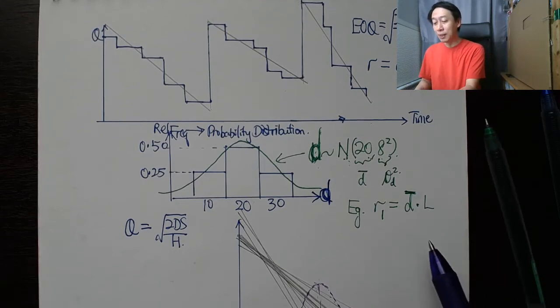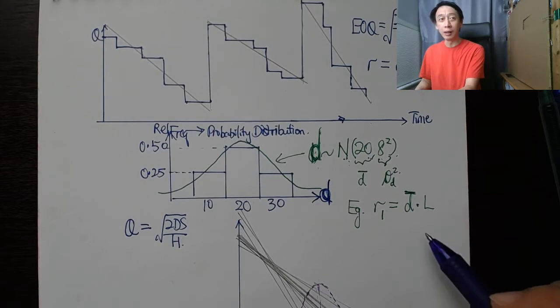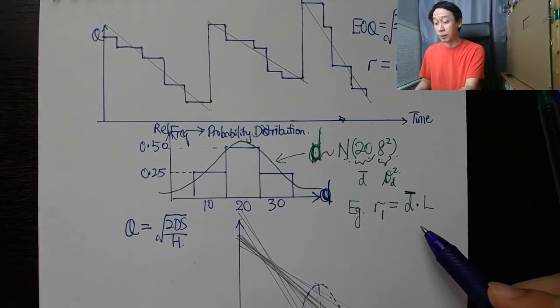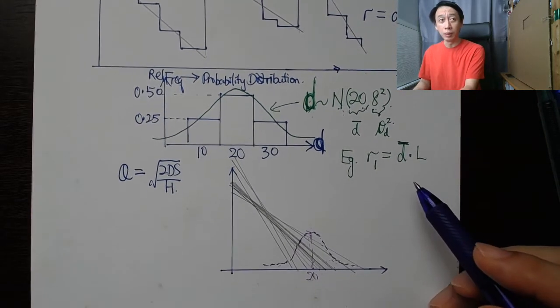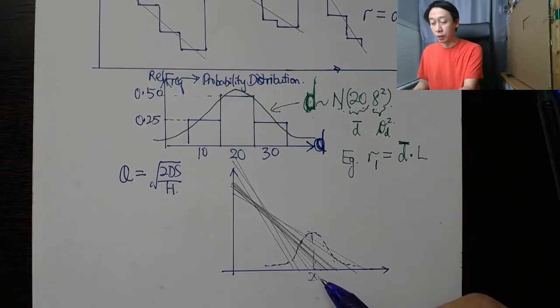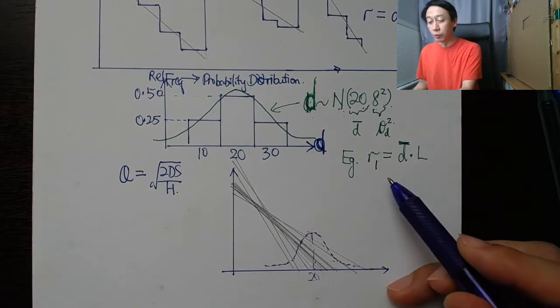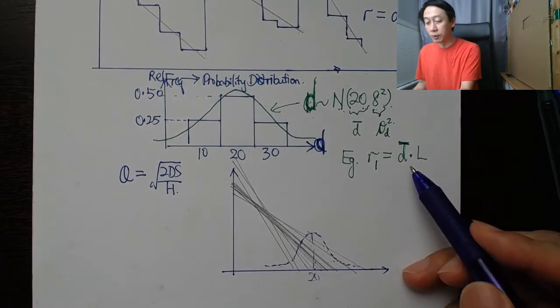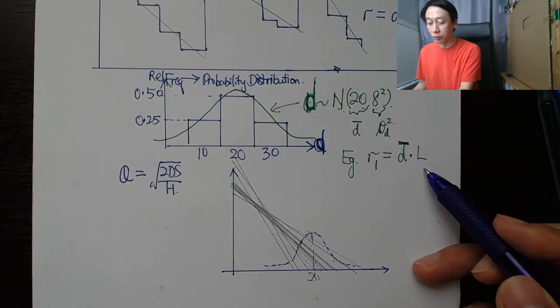But what does that mean in terms of reality when we implement this? Let's come to our distribution curve here. When we set r1 to be d̄ which is 20 times in our example, L equals 3.